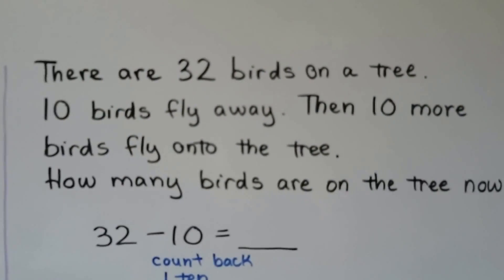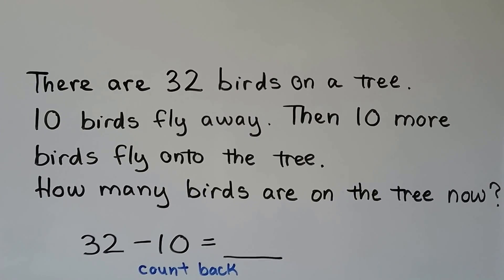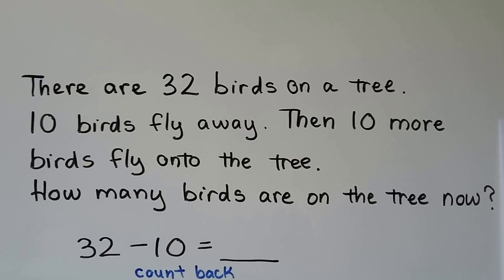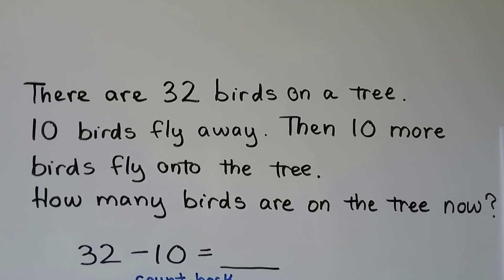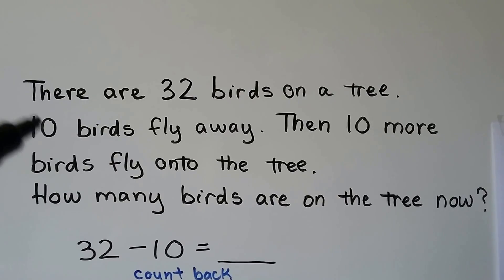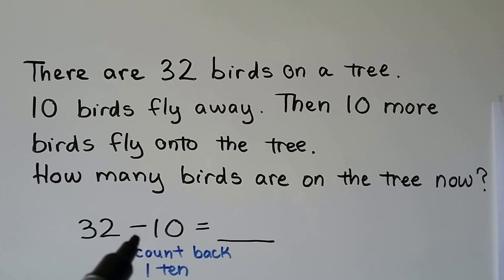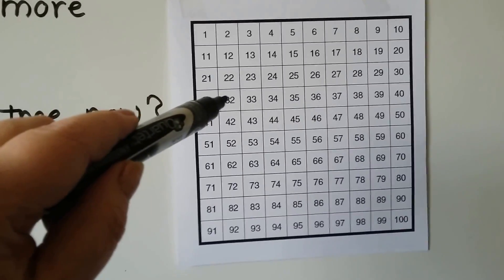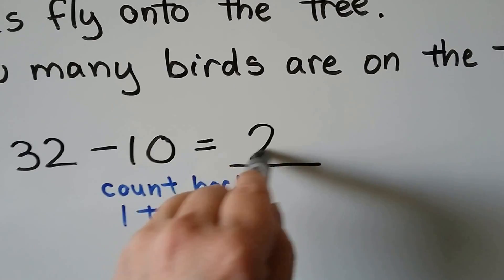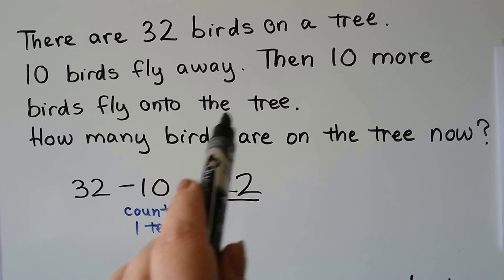Here's a word problem: there are 32 birds on a tree. Ten birds fly away, then ten more birds fly onto the tree. How many birds are on the tree now? We could draw a picture, or use a number sentence. We start with 32 and count back one ten using the 100 chart — that gives us 22. So now there are 22 birds in the tree.